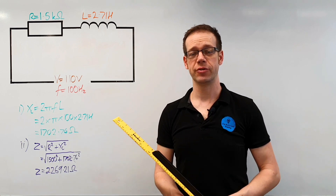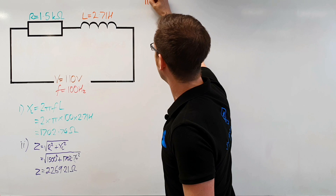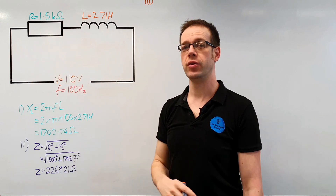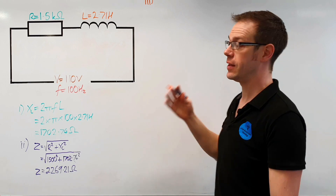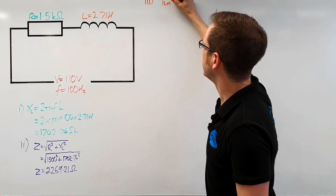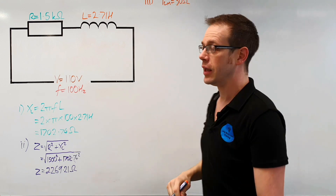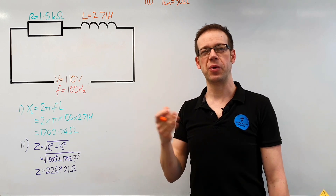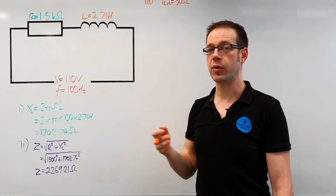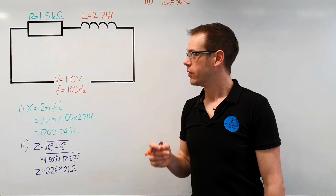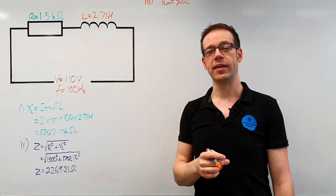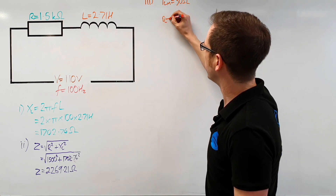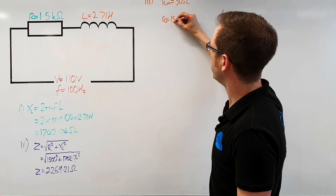The third part of the question asks us to draw an impedance triangle to scale for this circuit. Because the numbers involved here are quite a bit bigger than before, we're going to need a much different scale. I've decided to use a scale of one centimeter equals 50 ohms. It's very important when you draw your scale triangle that you write down what the scale is. The scale is a little bit trickier to work with in this one.